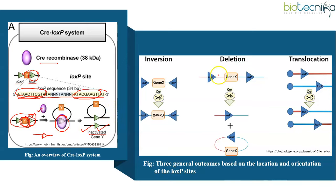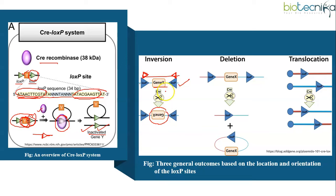Inversion occurs when the LOX-P sites are on the same DNA strand but facing in opposite directions — one LOX-P facing one way and another facing the opposite way. Recombination results in an inversion, and the region between the LOX-P sites is reversed. So when LOX-P sites have opposite orientation, the region of DNA between them will be reversed.